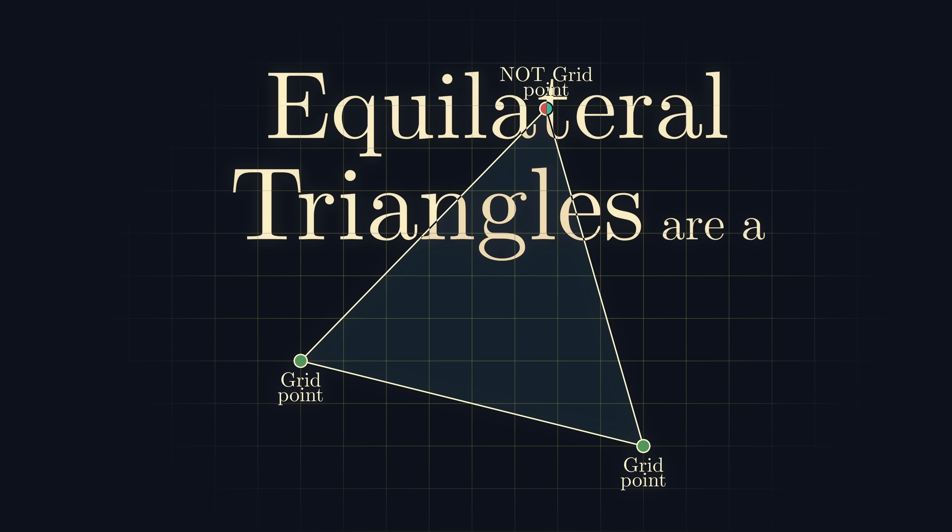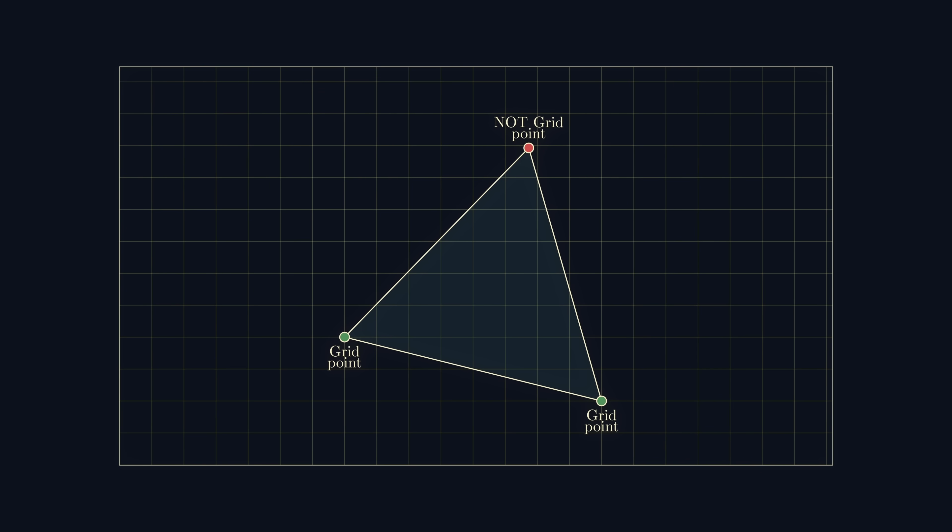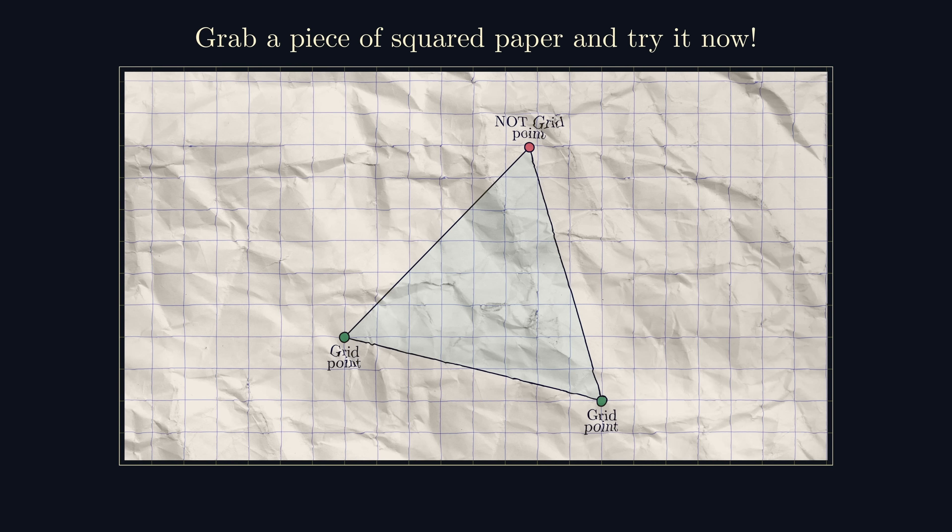Equilateral triangles are a pain to draw. Go on, grab a piece of squared paper and try it now. I'm guessing you chose two points on the grid, but the third point probably landed at some awkward position, making it pretty inconvenient to draw, right?